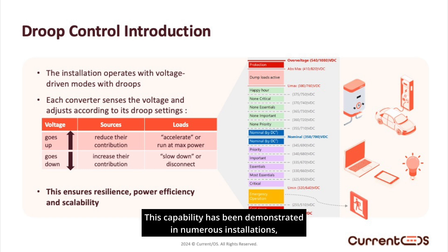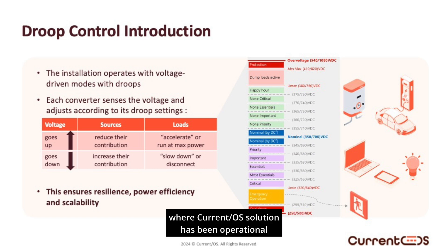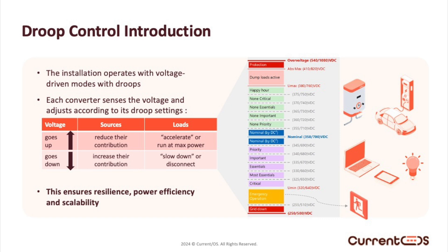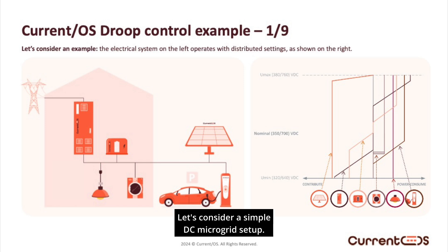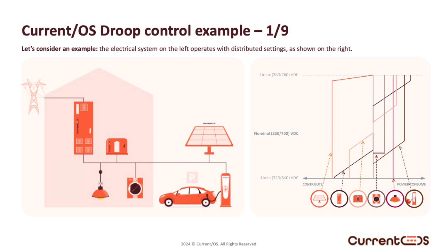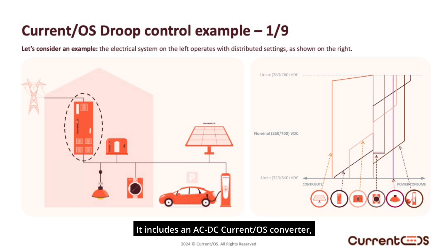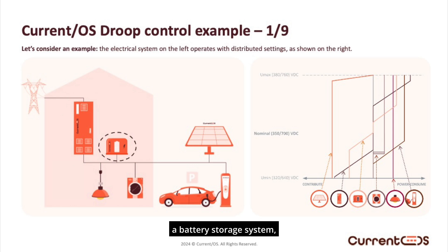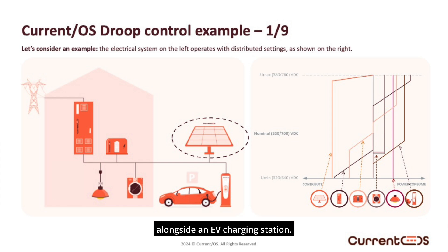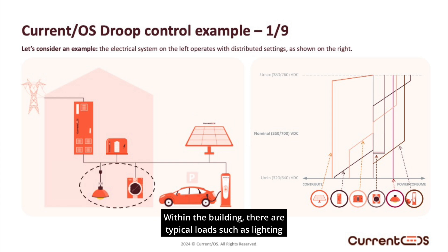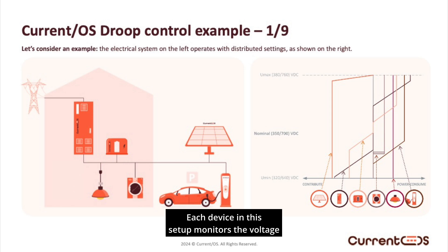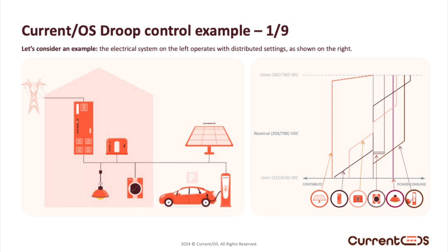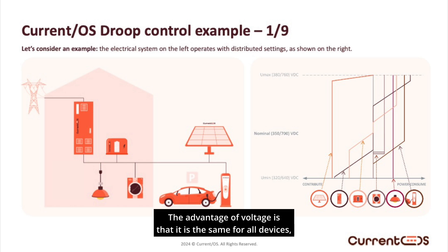This capability has been demonstrated in numerous installations where the Current OS solution has been operational for several years. To illustrate the concept with an animation: let's consider a simple DC microgrid setup. It includes an AC/DC Current OS converter, a battery storage system, and photovoltaic panels in the parking lot, alongside an EV charging station. Within the building there are typical loads such as lighting and a washing machine. Each device in this setup monitors the voltage on the common bus. The advantage of voltage is that it is the same for all devices, serving as a universal signal to guide their behavior.